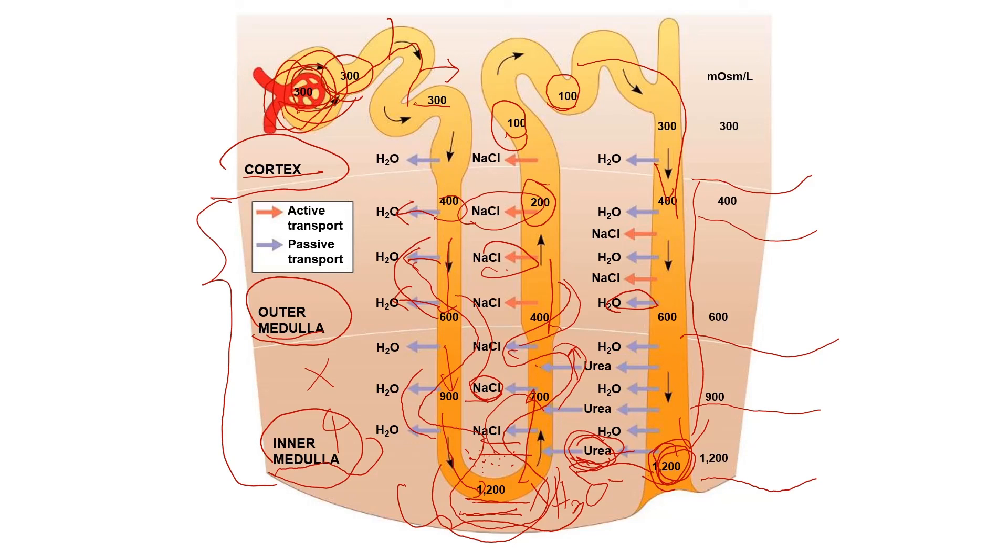When the kidney concentrates urine maximally, the urine reaches around 1,200 milliosmoles, the osmolarity of the interstitial fluid in the medulla. Although iso-osmotic with the interstitial fluid, the urine is hyper-osmotic to the blood and interstitial fluid elsewhere. This high osmolarity allows the solutes remaining in the urine to be excreted from the body with minimal water loss.